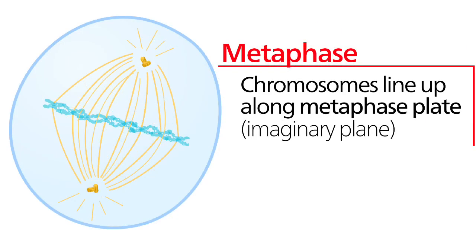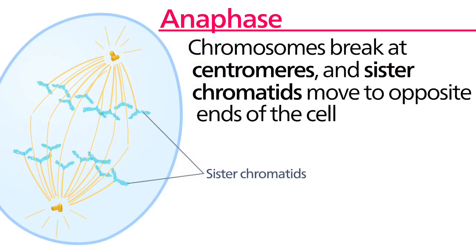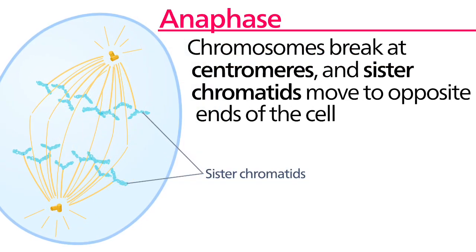The second stage of mitosis is called metaphase. In this stage, the chromosomes are attached to the centrosome. Each centrosome pulls to the end of the cell and this, therefore, lines up the chromosomes along the center of the cell, a region called the metaphase plate.